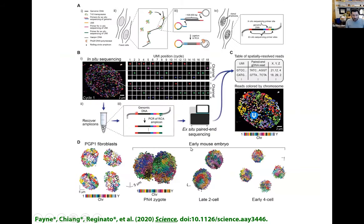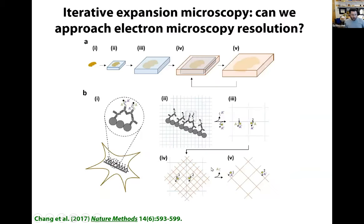As a side note, this doesn't involve expansion yet, but we saw an opportunity to use this in-situ sequencing strategy to look at the genome as well. In collaboration with Jason Buenrostro and Fei Chen's groups, led by Andrew Payne, Zachary Chiang, and Paul Reginato, we showed we could insert barcodes into the genome and sequence them in-situ.